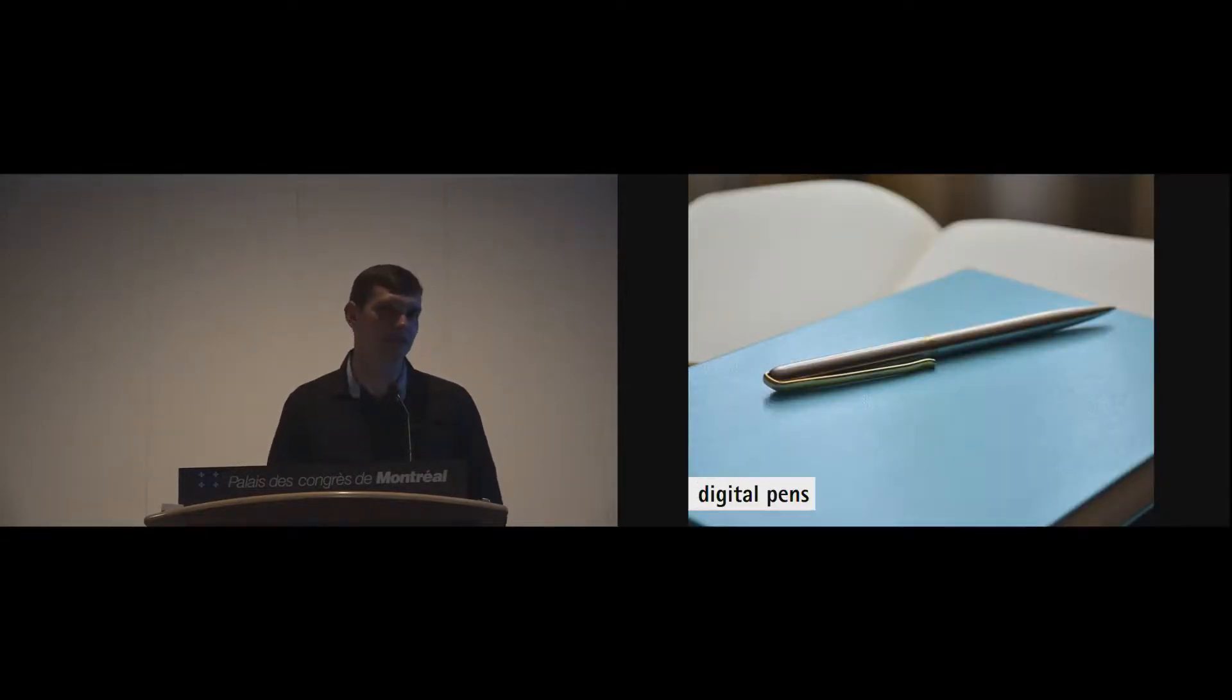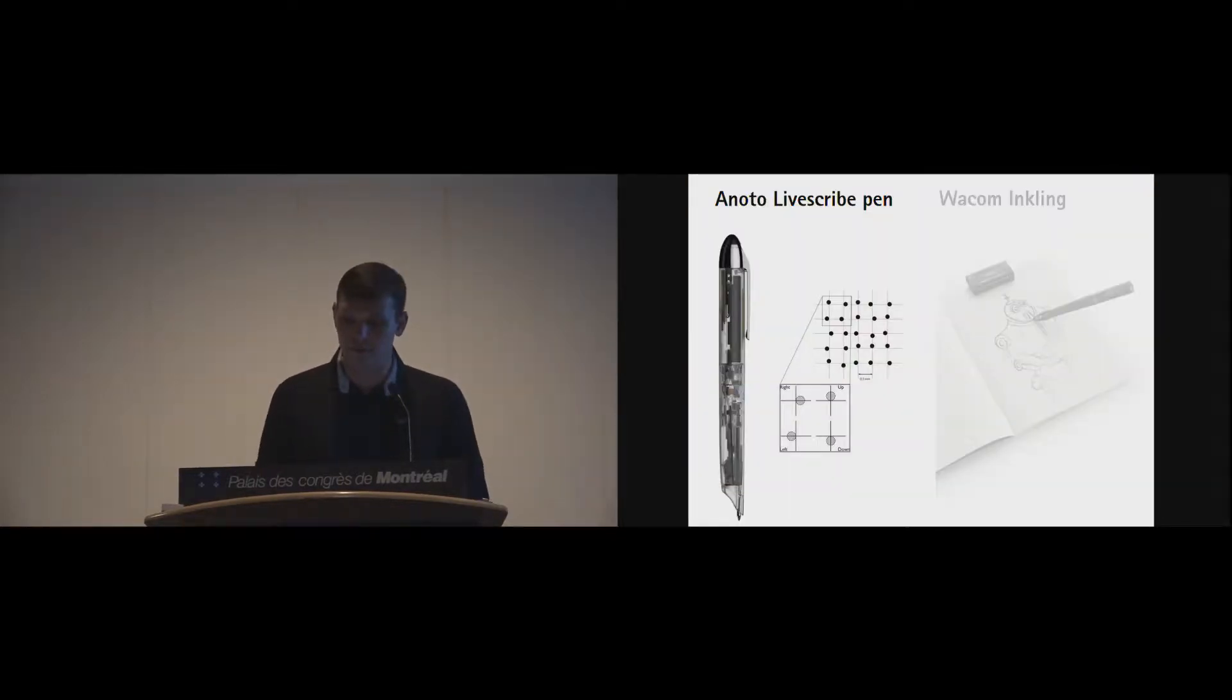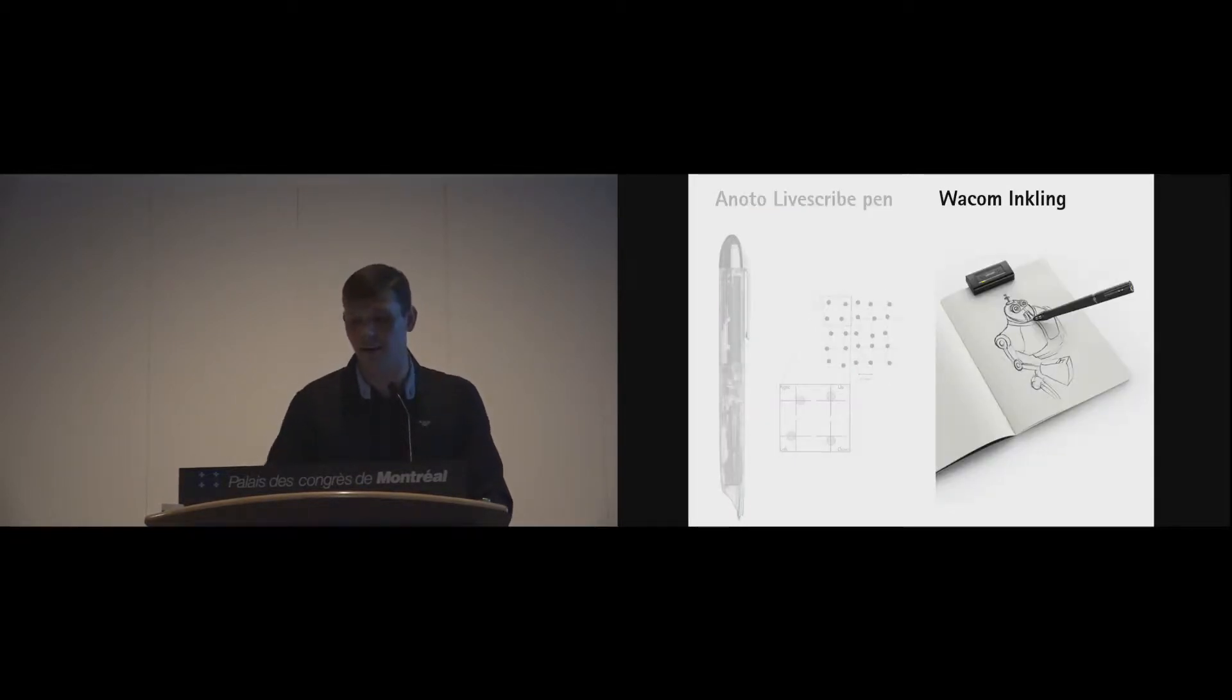For the introduction, I would like to show some digital pens which we can find on the market. First of all, the well-known Enote LiveScribe pen, which basically has a printed micro dot pattern on a piece of paper and recognizes strokes with an inbuilt camera. Another principle is the Wacom Inkling, which uses a base station clipped on a piece of paper in line of sight with a digital pen.